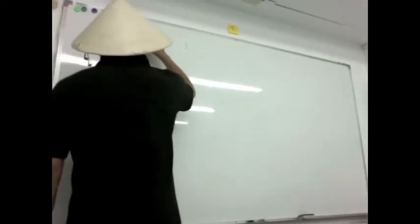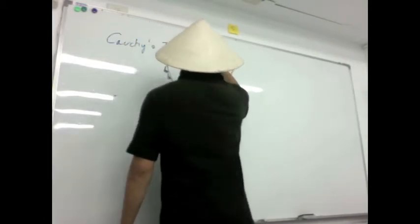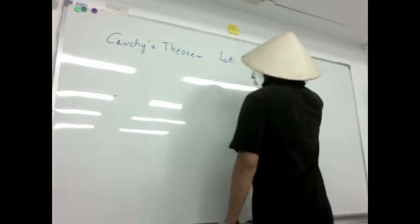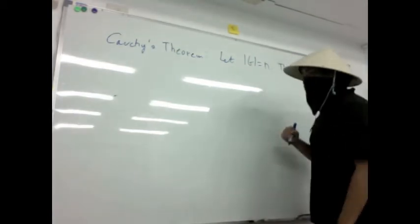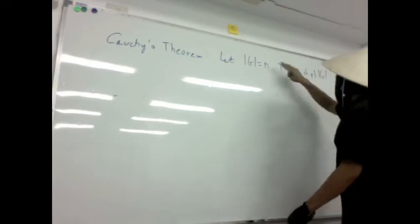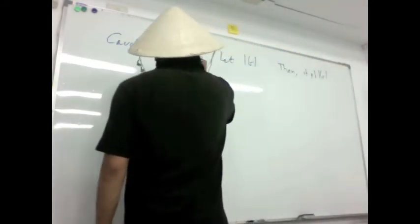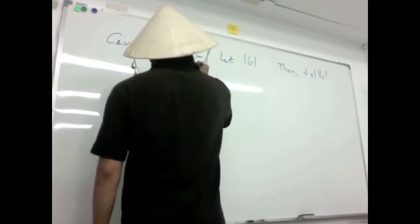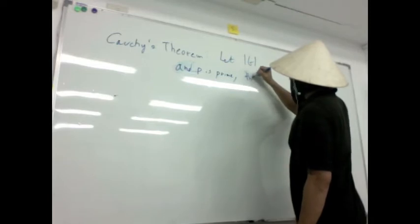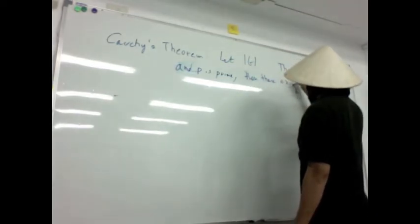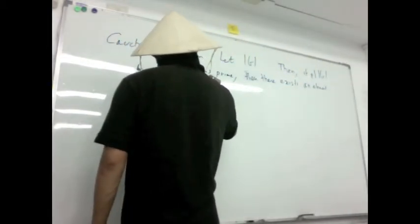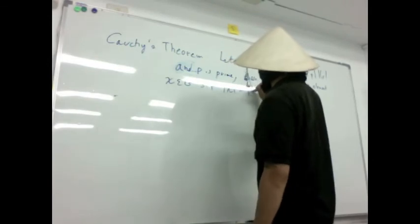Cauchy's theorem. The theorem says: let the order of G equal m. Then if p divides the order of G and p is prime, then there exists an element x in G such that the order of x equals p. Beautiful.